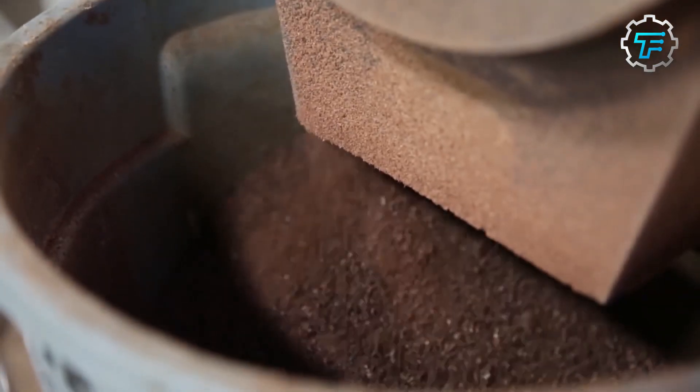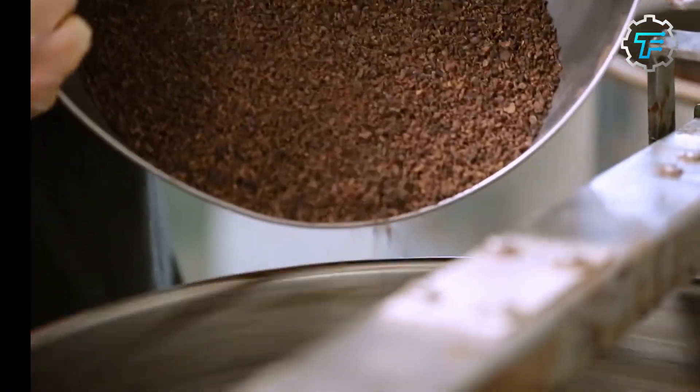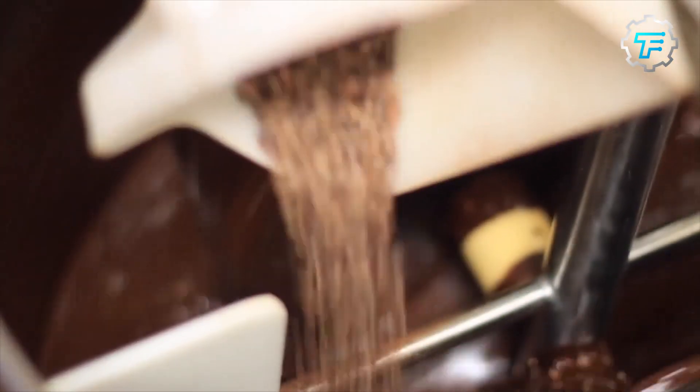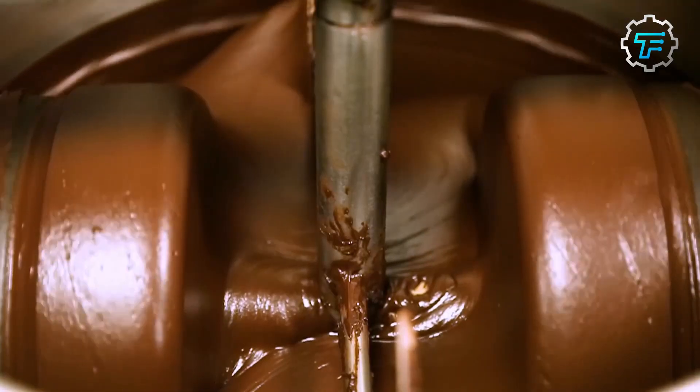Step six, grinding. The roasted beans now move to a grinding machine that uses rotating blades to break down the nibs into a fine paste called cocoa liqueur, releasing the nib's natural oils and flavors.